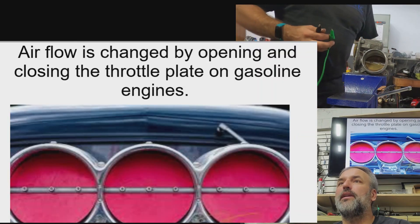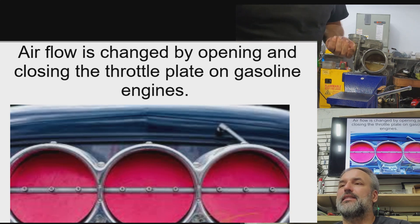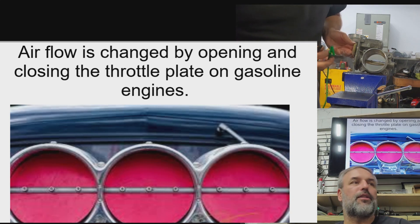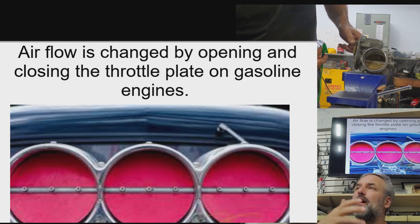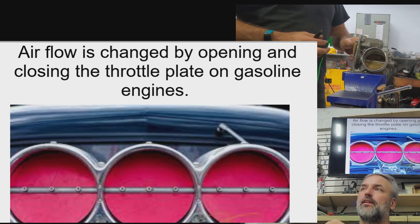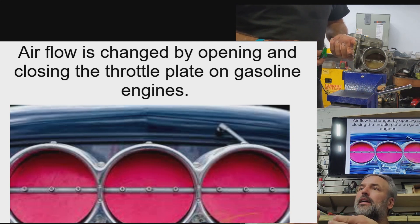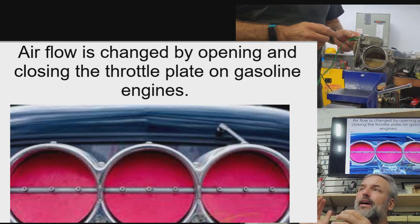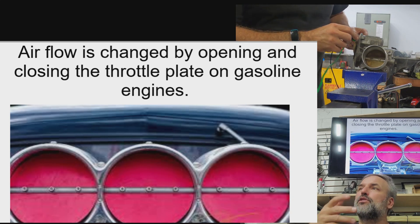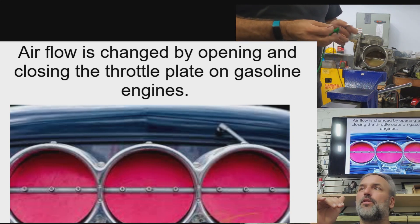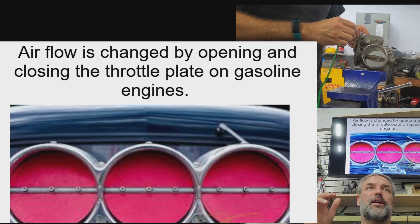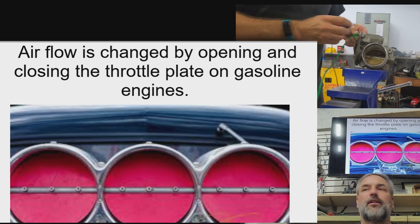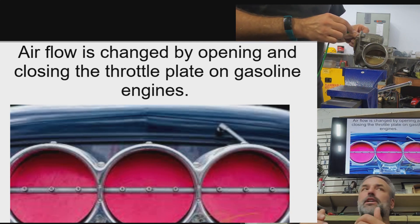Airflow is changed by opening and closing the throttle plate on gasoline engines. To control the amount of air going into the engine, you have the throttle plate — when it opens up, it allows air into the engine. On a carbureted car, when the throttle plate opens, it creates a vacuum in the venturi which sucks the fuel into the engine. There's also a mechanical pump that sprays some fuel in there — like a pre-shot — so it doesn't bog out when you hit the throttle. On a fuel-injected car, the fuel injection just sprays the fuel.